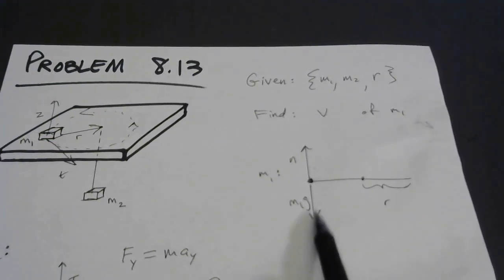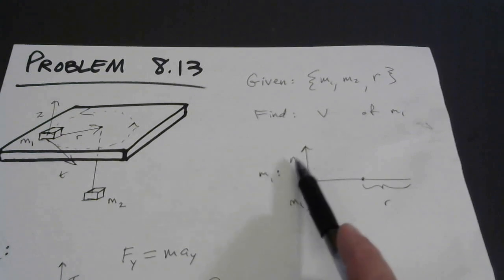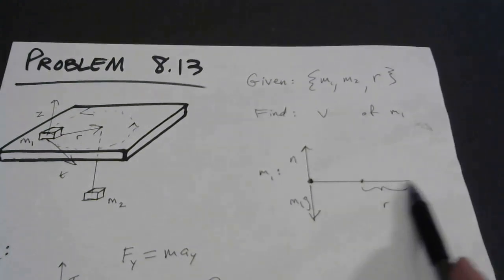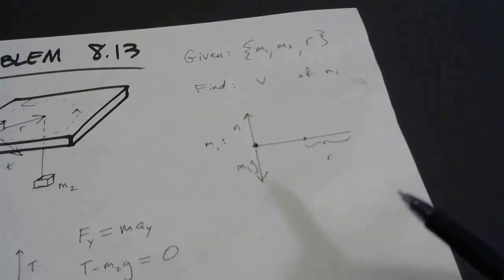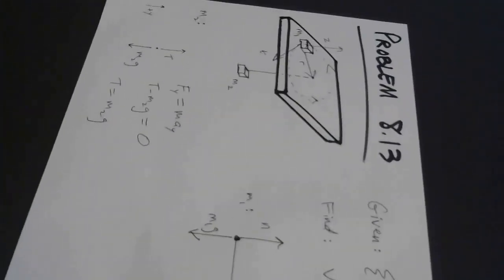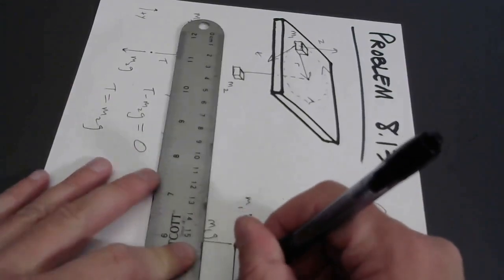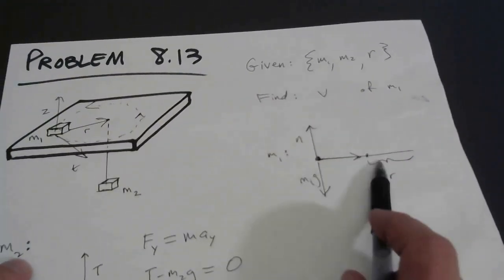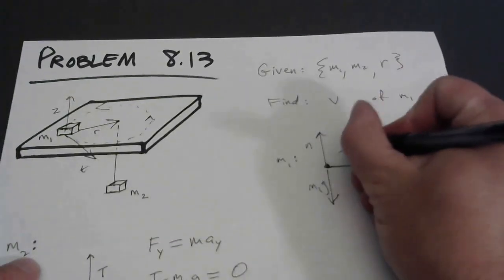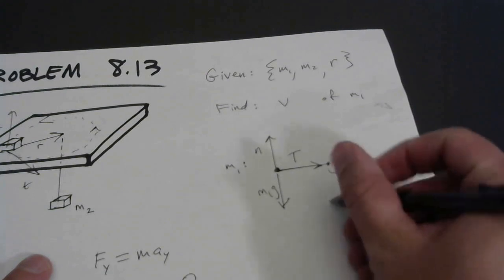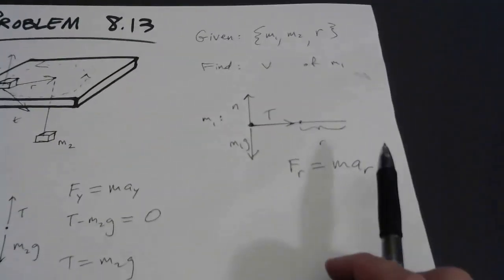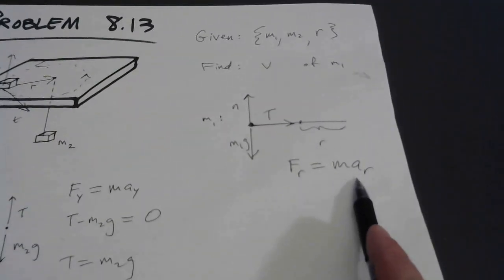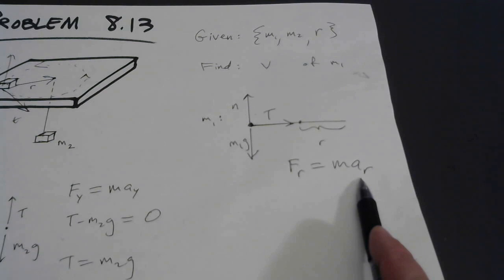In many problems you'd need to look at the sum of z-forces to solve for the normal force N, but in this problem I can see the road ahead and there's no need. I'll go straight to the r equation. The last force acting on M1 is directed towards the center — that's the tension T. The sum of forces in the r direction equals M1 times radial acceleration.